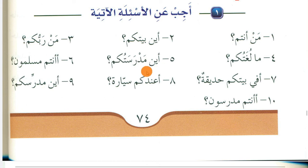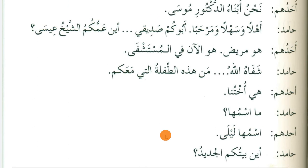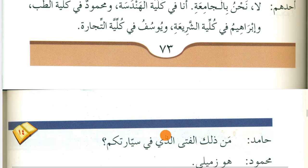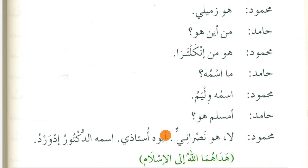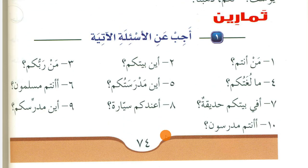You can also say: Al-arabiyyatu lughatuna — Arabic is our language. Aina madrasatukum? — Where is your school? You can write anything for this answer, for example: Madrasatuna amam al-masjid, or Madrasatuna fi shari' Khalid bin Walid. Answer all of these questions in a similar way.